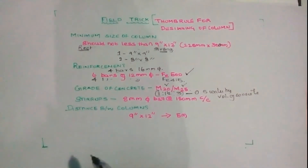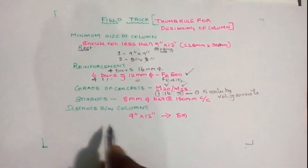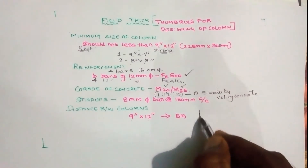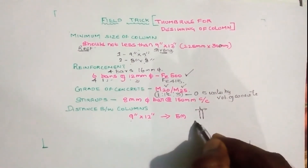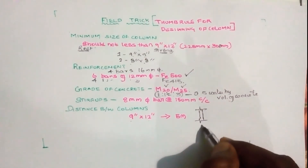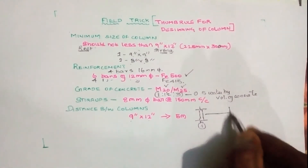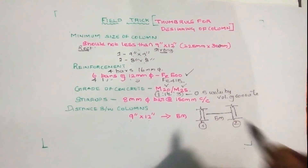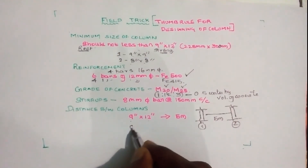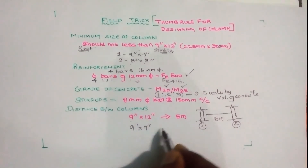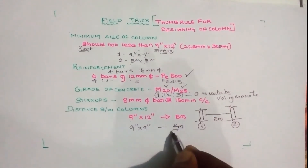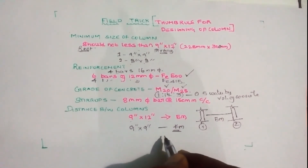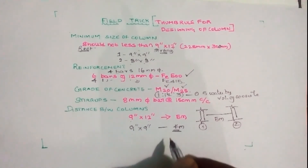For column spacing: if column one and column two are placed with a distance of 5 meters between them, the effective span is about 4 to 5 meters. A square column can be used with bar sizes of 8 bars in a 12-inch column for spans up to 4 meters.